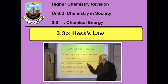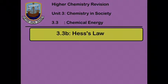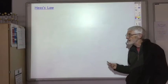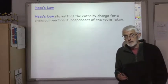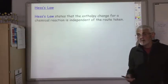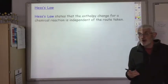This is the second lecture on chemical energy and we're going to look at using Hess's law to calculate the enthalpy change for reactions which are not easy to determine experimentally. Hess's law states that the enthalpy change for a chemical reaction is independent of the route taken, and the importance of this is that it allows us to work out the enthalpy change for a chemical reaction which we cannot determine experimentally.